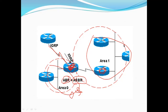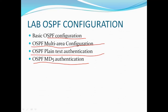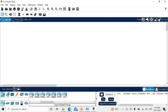Now after this theory we'll be doing a lab on OSPF configuration. We'll be doing basic OSPF configuration, then OSPF in multiple area configuration, OSPF plain text authentication, and OSPF MD5 authentication. I'm now in Cisco Packet Tracer — let me grab some routers, switches, and PCs. I'll grab two 2621 series routers.